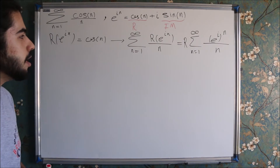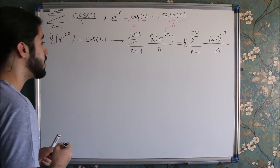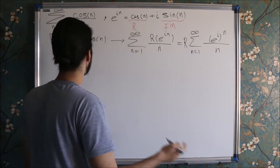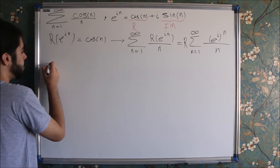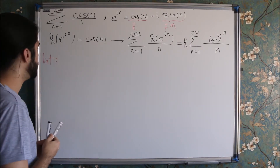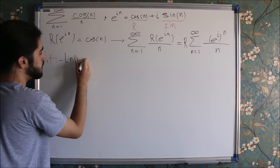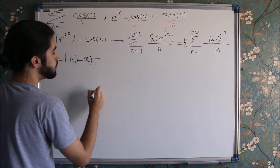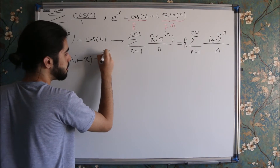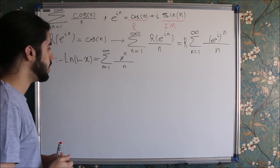So it looks familiar — it's actually the Taylor series of the natural logarithm. The Taylor series of minus ln of 1 minus x is equal to the infinite sum of x to the power of n over n. This is a known identity.